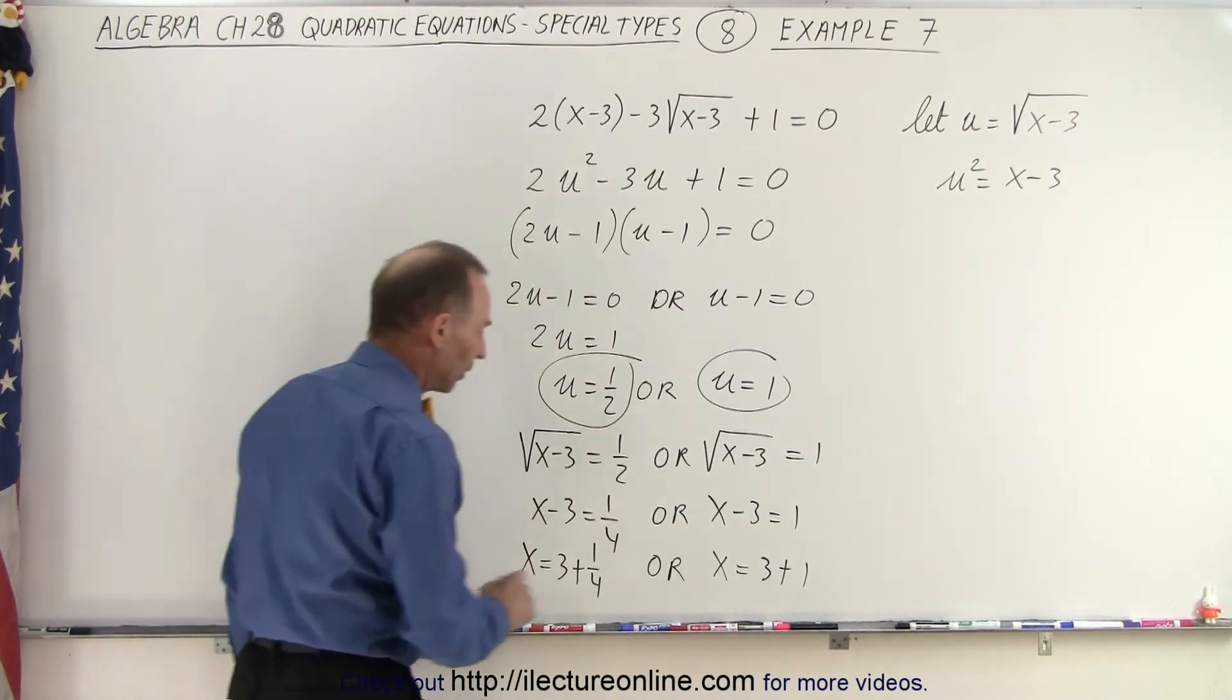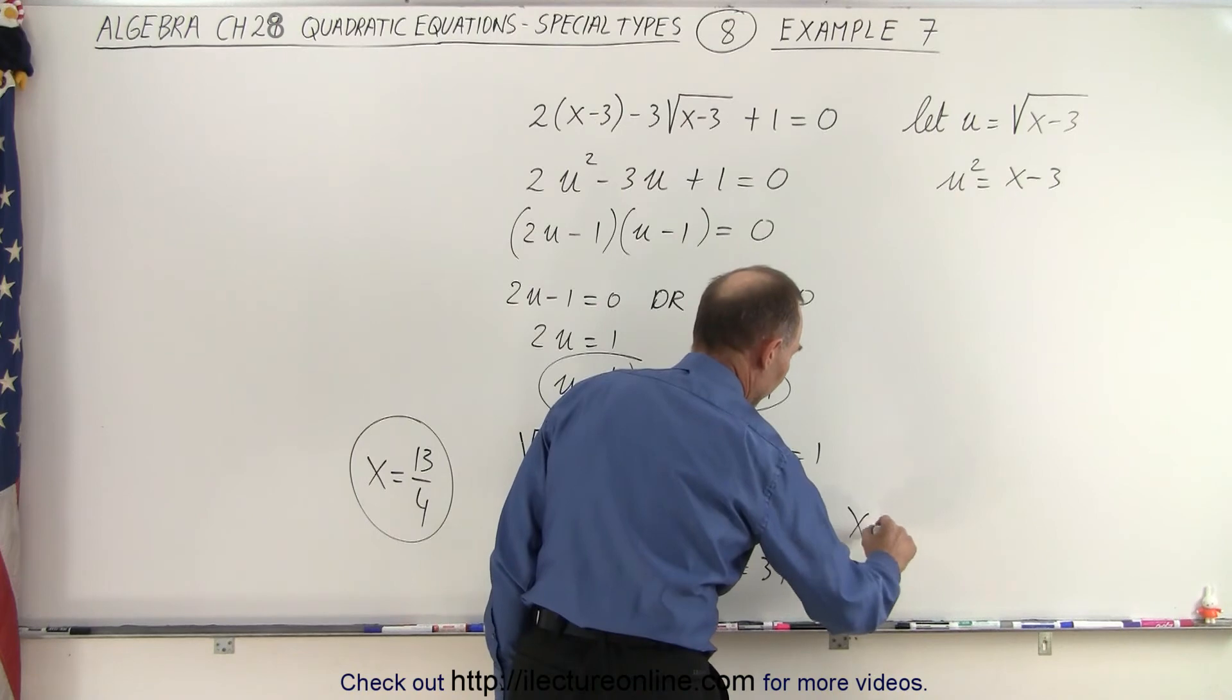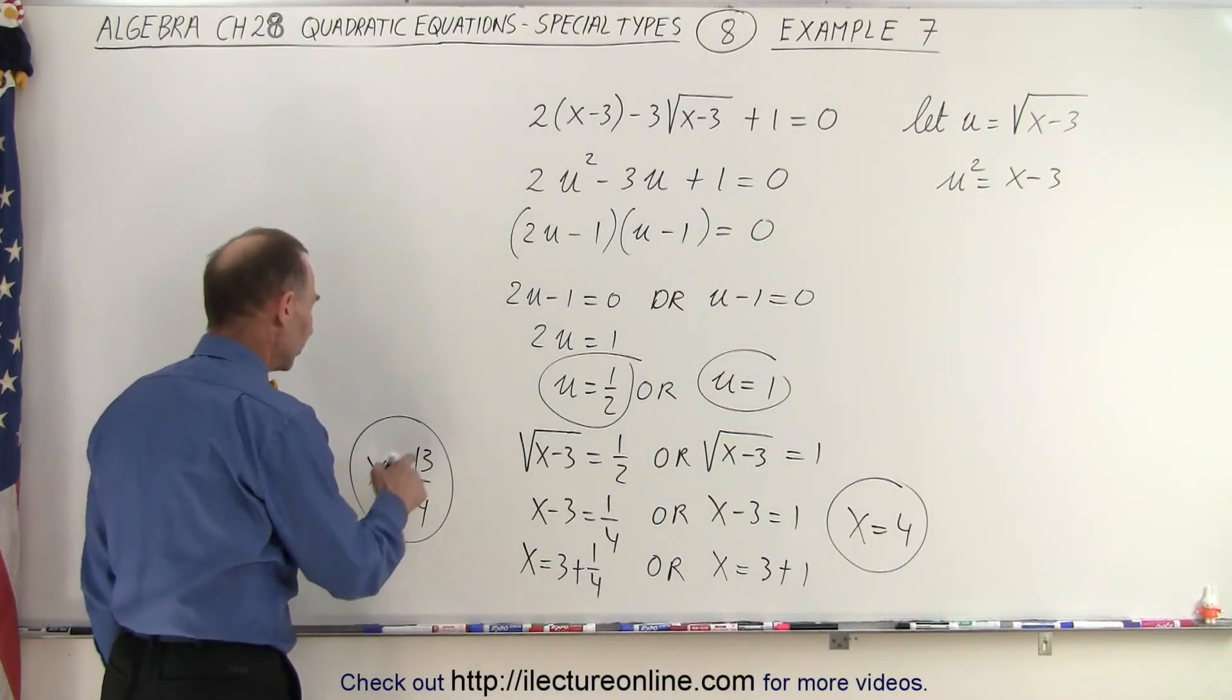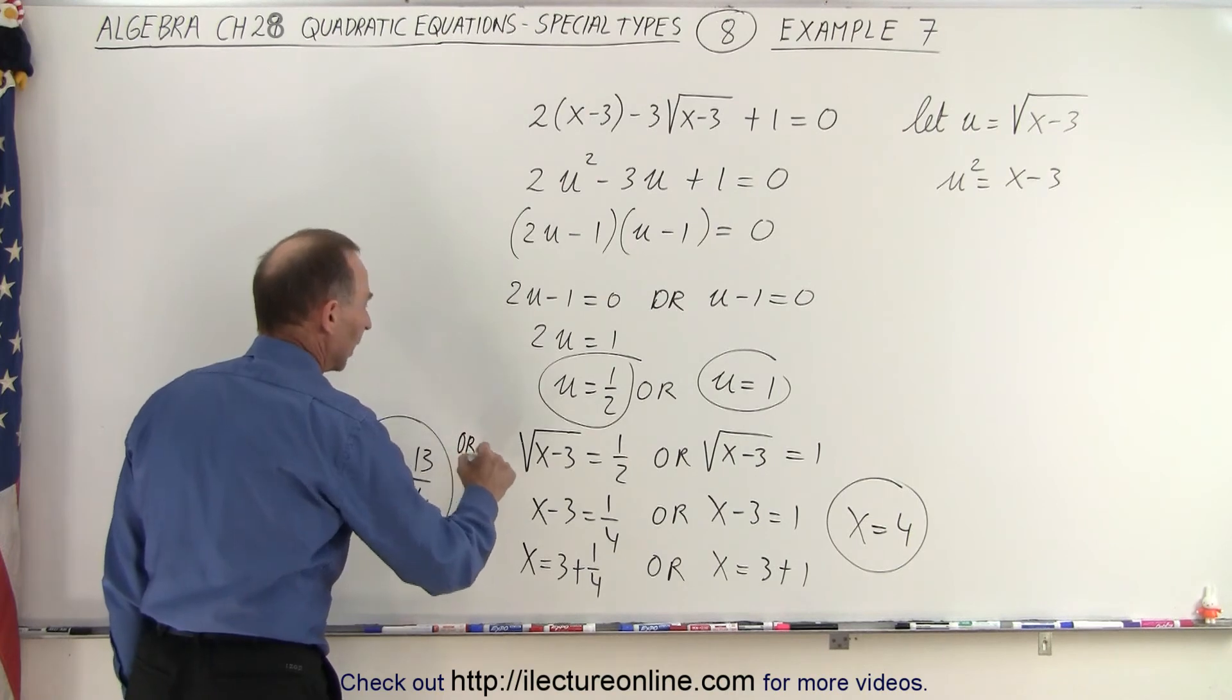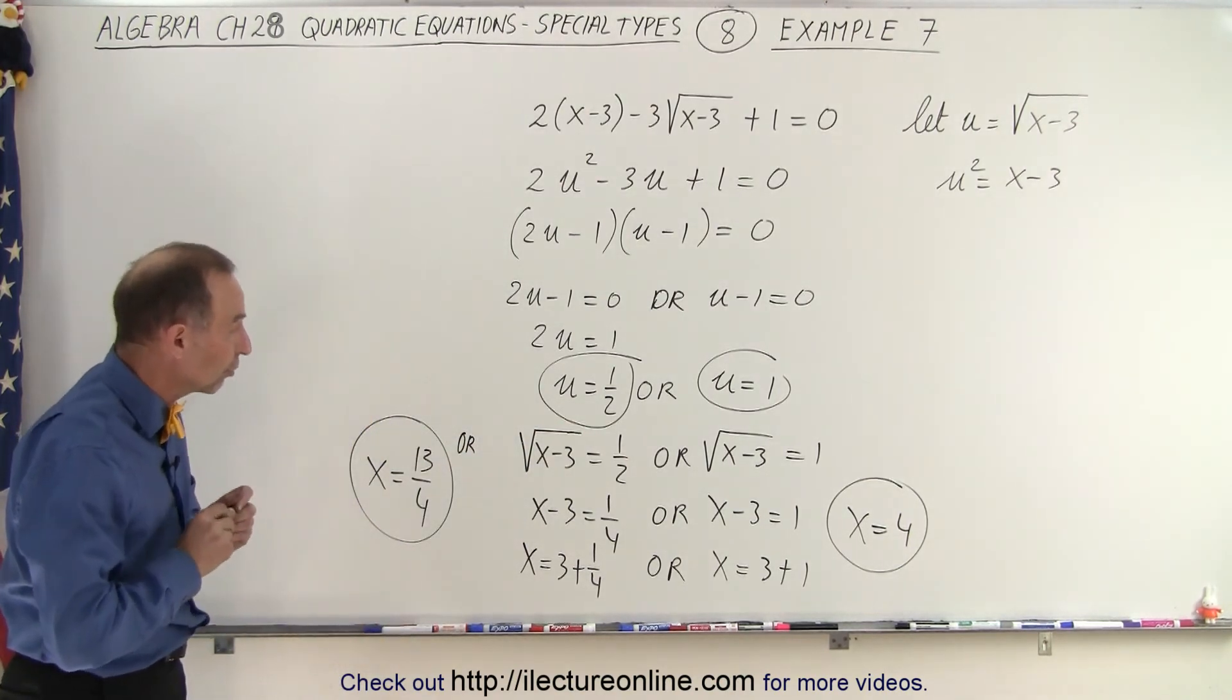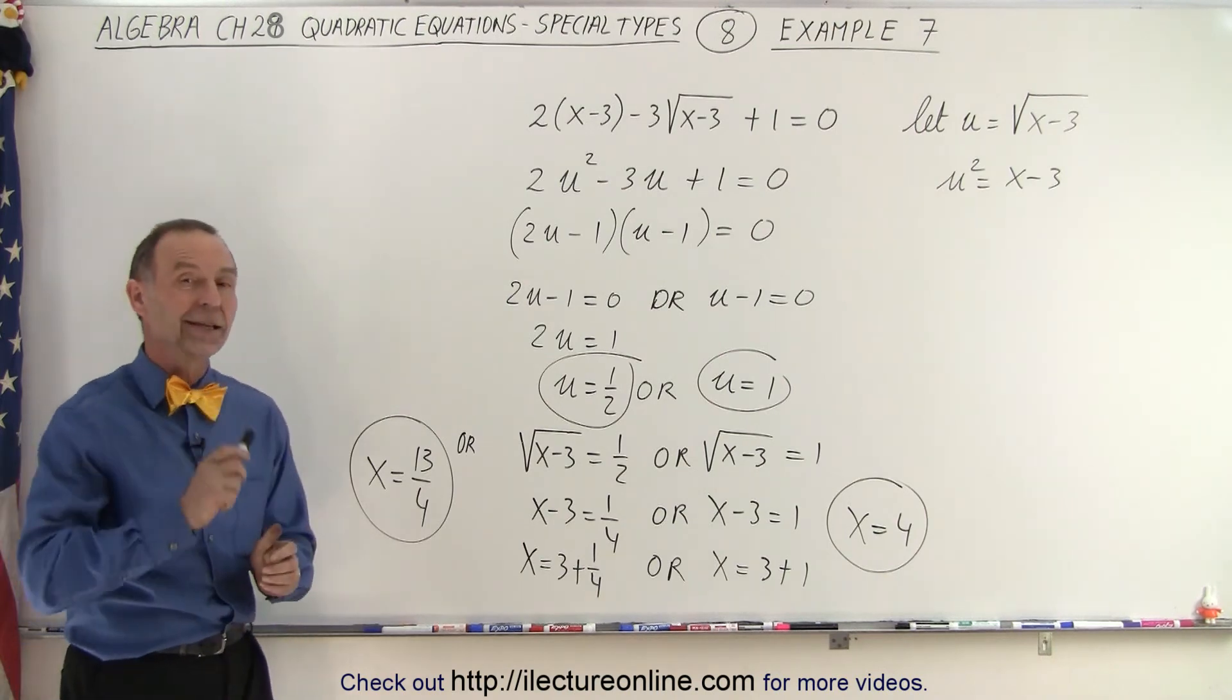That's one possible solution. Over here, we can say that x is equal to 4 as the other solution. So either x equals 13 over 4, or x equals 4 as the two solutions to our original equation. And that is how it's done.